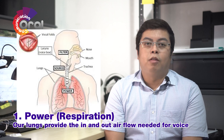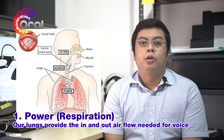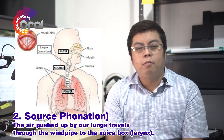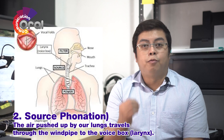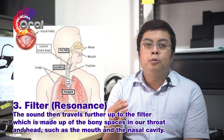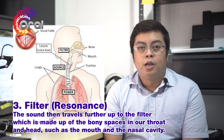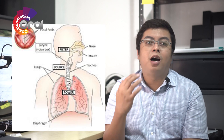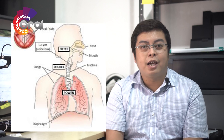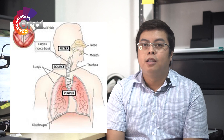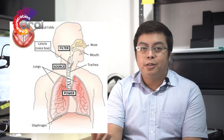The lungs provide the inflow and outflow of air needed to produce a sound. The air is pushed up through the windpipe or trachea to the voice box or larynx. Finally, the articulators inside the mouth — the nasal cavity, the teeth, the tongue, and the lips — work together to shape the air and make vibrations in different ways to produce our voice.